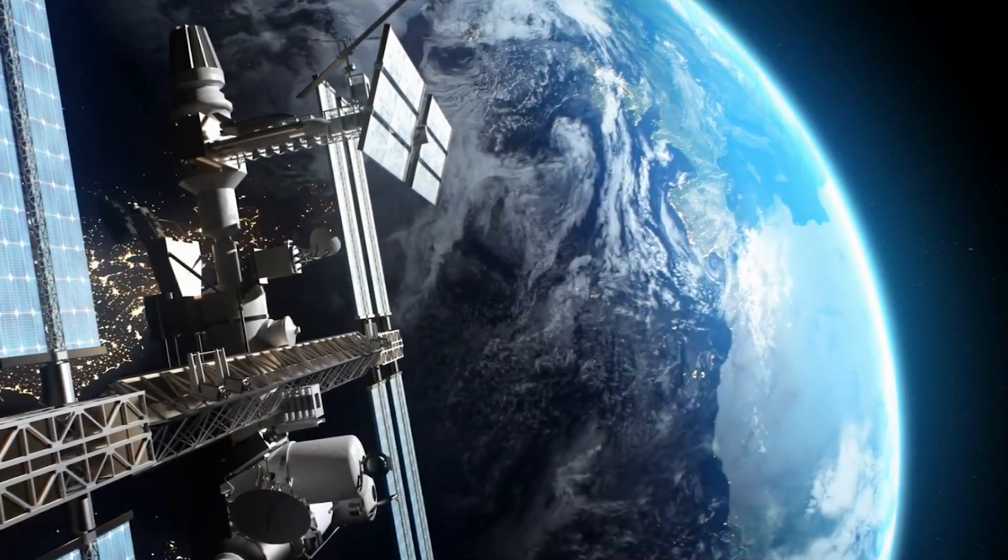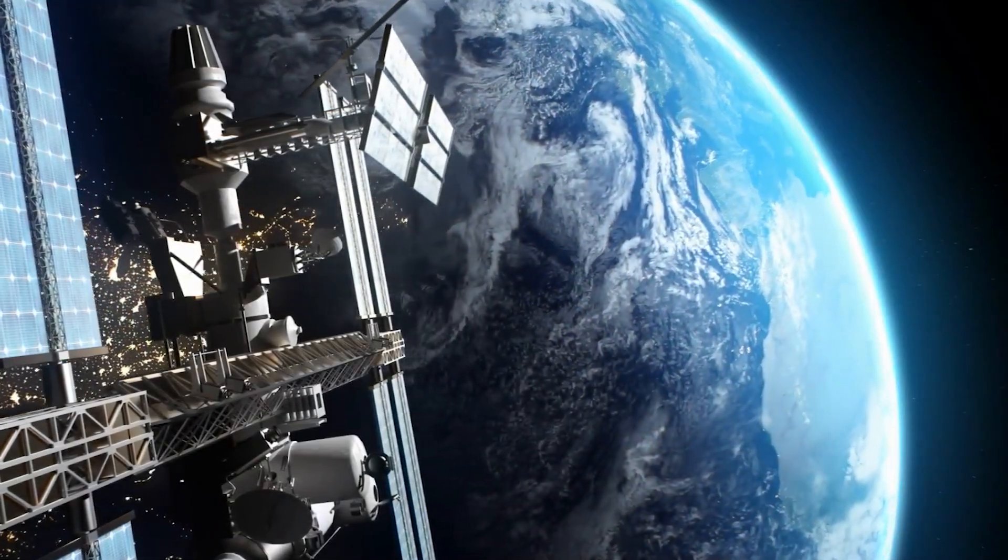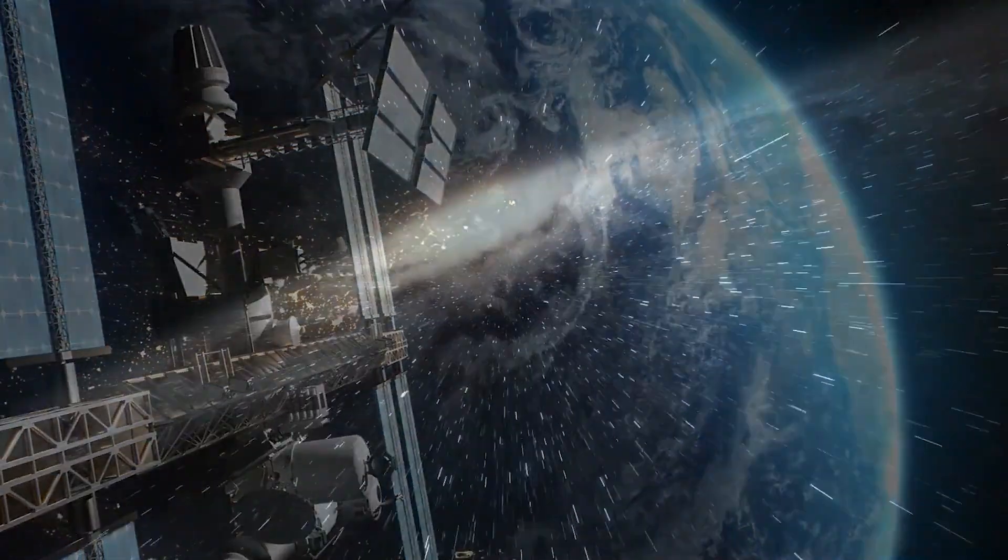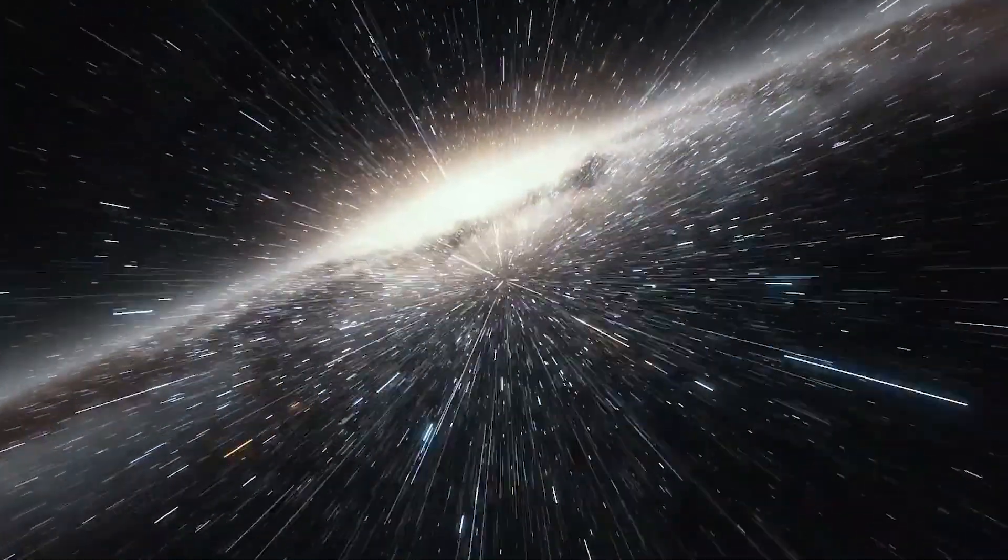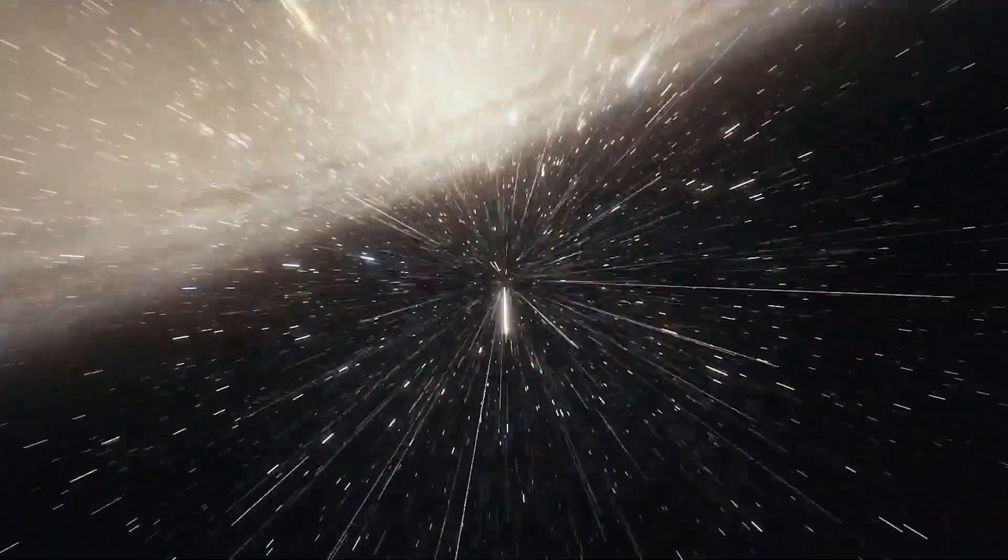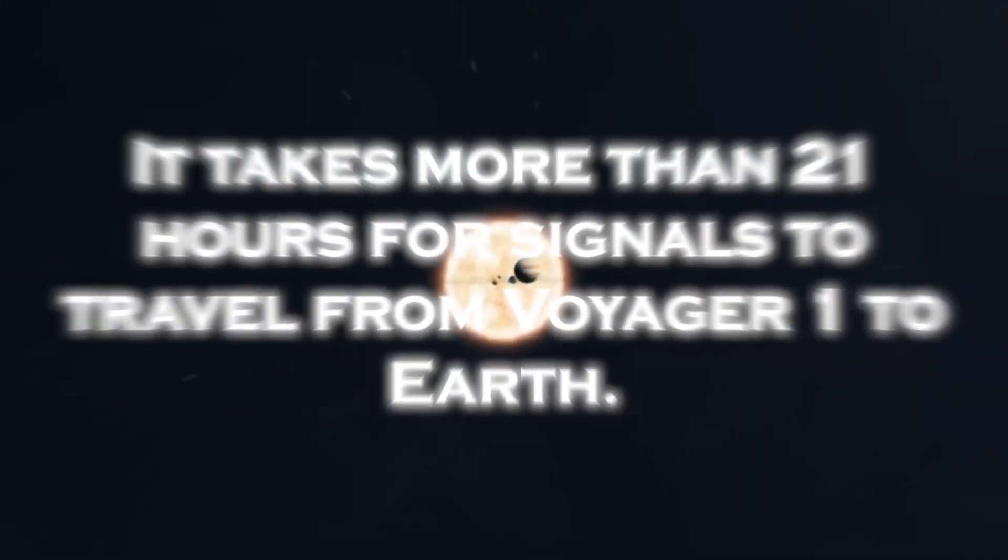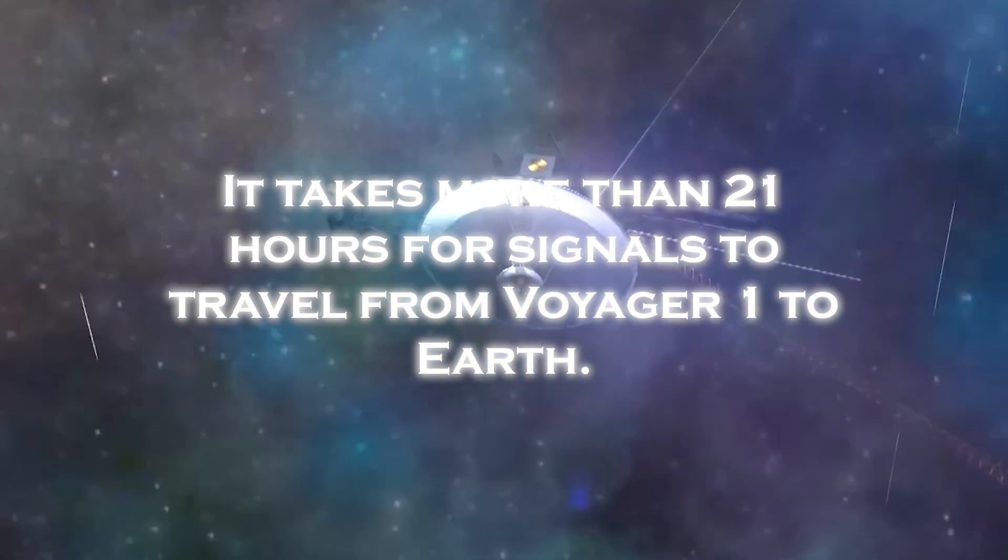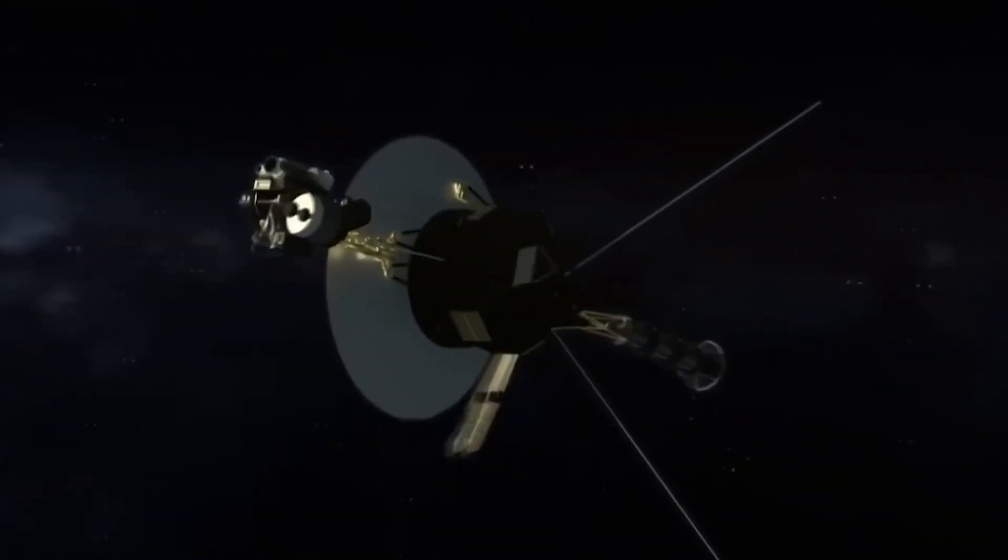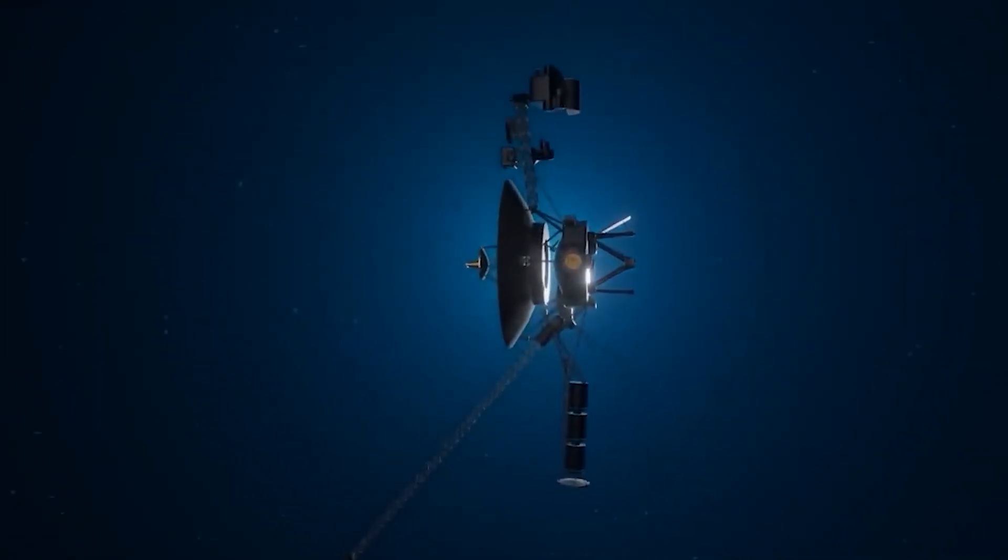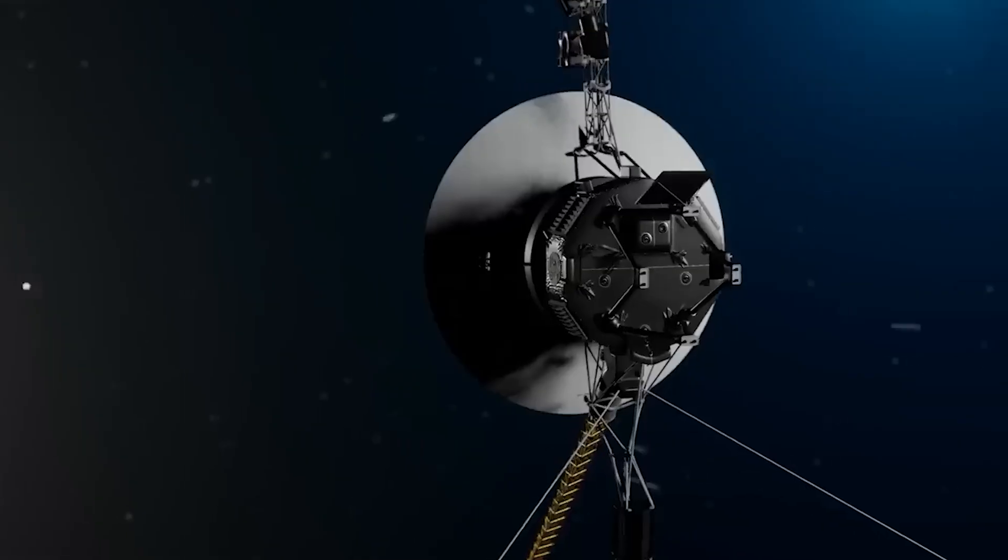However, the great distance between Voyager 1 and Earth presents a significant challenge to maintaining effective communication. As the spacecraft ventures into interstellar space, Voyager 1's signal strength has weakened. It takes more than 21 hours for signals to travel from Voyager to Earth. The weak signal, combined with the interference from background noise, makes it difficult to transmit and receive data.